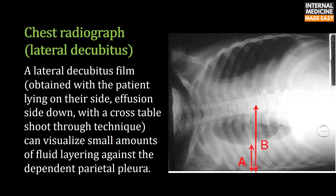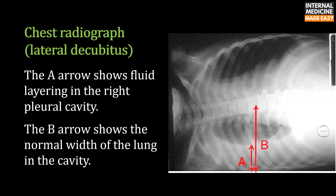Lateral decubitus: A lateral decubitus film is obtained with the patient lying on their side, effusion side down, with a cross-table shoot-through technique. This can visualize small amounts of fluid layering against the dependent parietal pleura. In the right-sided image, the A arrow shows fluid layering in the right pleural cavity, and the B arrow shows the normal width of the lung in the cavity.